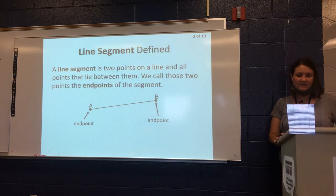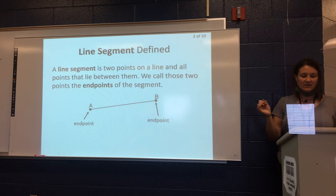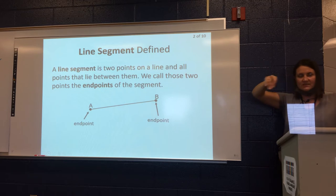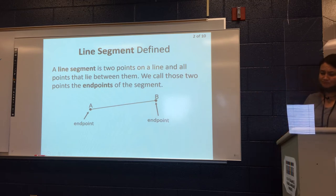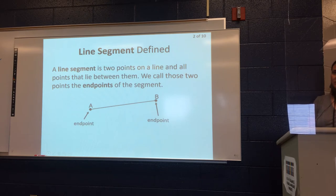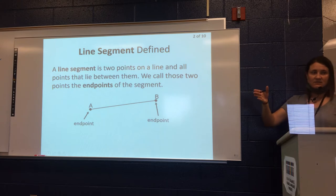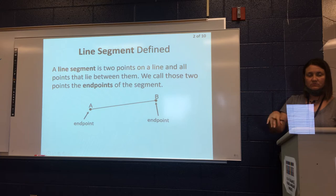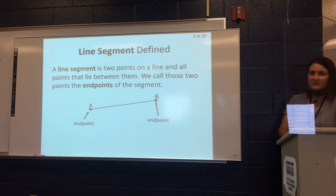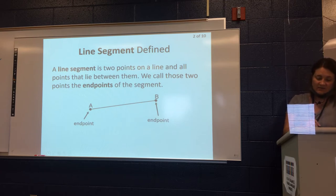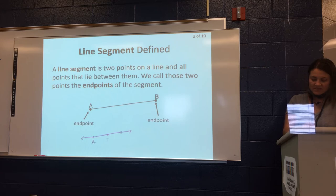A line segment is just a piece of a line. We'll have two points and all the points in between that make up a line segment. Those two points are called the end points. When we name line segments, it's going to be kind of like we did with lines, except with lines we just needed any two points on a line.